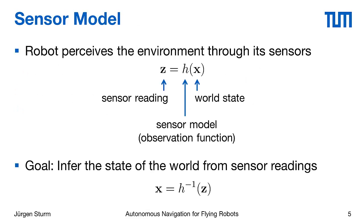Let's start with the sensor model. The robot perceives its environment through its sensors, and this is modeled using a sensor function. A sensor function takes the world state as input and generates a sensor reading — in practice implemented in hardware. Our goal is to invert this process and infer the state of the world from the sensor readings that we obtained.